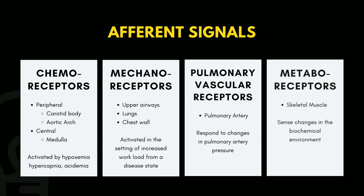The afferent signals trigger the CNS and include primarily peripheral chemoreceptors in the carotid and aortic arch and central chemoreceptors in the medulla, both activated by hypoxemia, hypercapnia, or acidemia, and might produce a sense of air hunger.